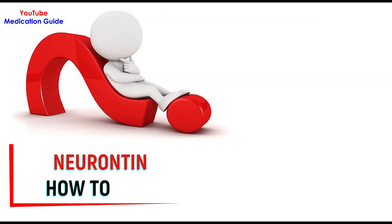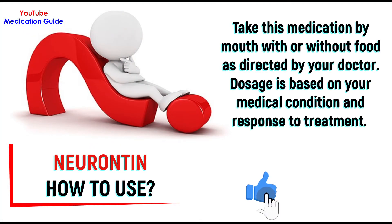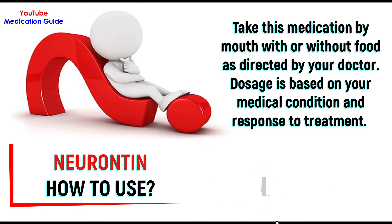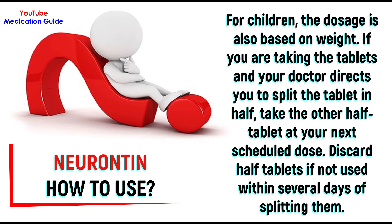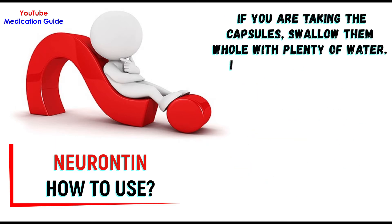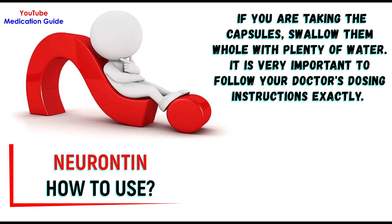How to use Neurontin. Take this medication by mouth with or without food as directed by your doctor. Dosage is based on your medical condition and response to treatment. For children, the dosage is also based on weight. If you are taking the tablets and your doctor directs you to split the tablet in half, take the other half tablet at your next scheduled dose. Discard half tablets if not used within several days of splitting them. If you are taking the capsules, swallow them whole with plenty of water.